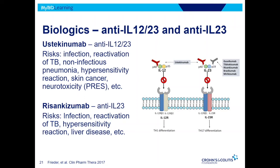A little bit newer is ustekinumab, which has been out quite a while — that's Stelara. And just this year is risankizumab, which is Skyrizi, approved just this year as well. They're similar in that they impact IL-23 — these are called IL-12/IL-23 blockers or just IL-23 blockers. There are other drugs in this class in the process of getting FDA approval in trials. The nice thing about these is they have very good efficacy — ustekinumab has been shown to have equivalent efficacy to adalimumab — and they actually have less risk than infliximab and adalimumab.